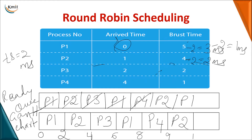Now only P2 remains, with 2 milliseconds pending — exactly equal to the time quantum. At 11 milliseconds P2 completes and is not added back. Finally, P1 requires 1 millisecond, so at 12 milliseconds P1 completes. The completion times are: P1 = 12, P2 = 11, P3 = 6, P4 = 9.